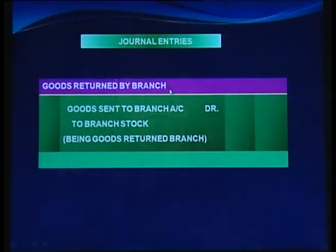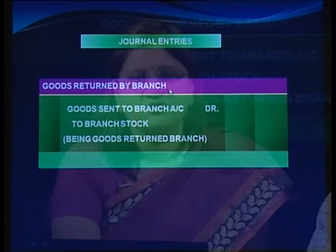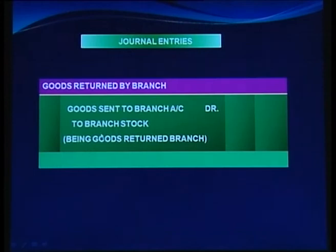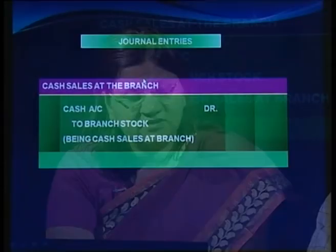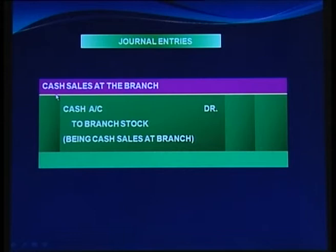For goods returned by the branch: when goods are returned to the head office, we pass a reverse entry — Goods Sent to Branch Account debit to Branch Stock. For cash sales at the branch: Cash Account debit to Branch Stock. Here, the first account affected is cash and the second is branch stock.